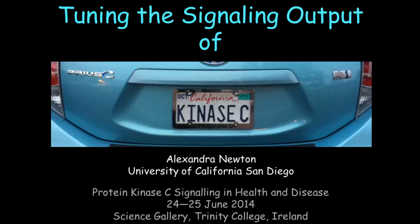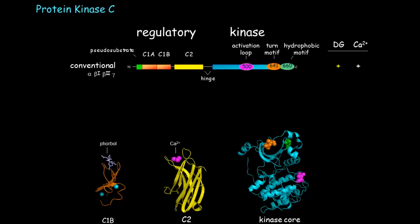This is Alexander Newton, and I'll be speaking about tuning the signaling output of protein kinase C. Protein kinase Cs are a family of enzymes that transduce signals that result in lipid hydrolysis. There are nine isozymes grouped into three families, and they share the same architecture. I'm going to talk first about the conventional protein kinase Cs, which are regulated by both diacylglycerol and calcium.